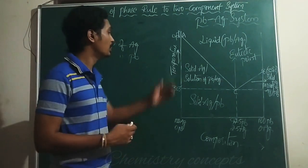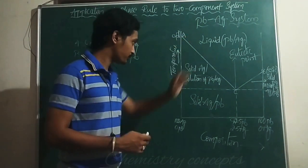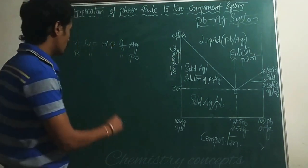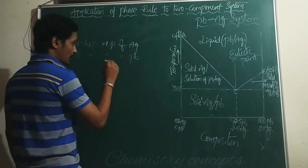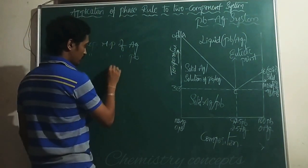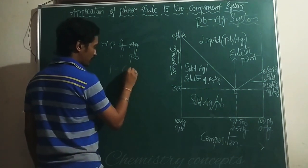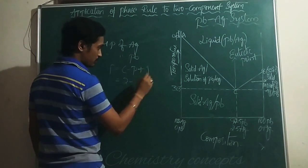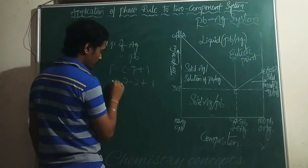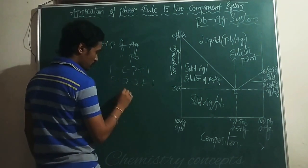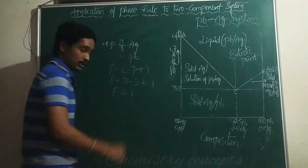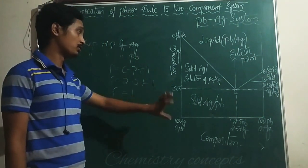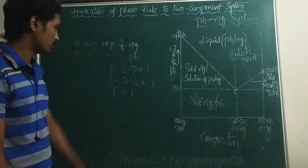As lead is added to silver, it reduces the melting point. Along the AC curve, two phases are in equilibrium: solid Ag and a solution of Pb in Ag. Applying the phase rule, F = C − P + 1 = 2 − 2 + 1 = 1. So F equals 1, meaning the system is univariant — you can vary any one of the independent variables.